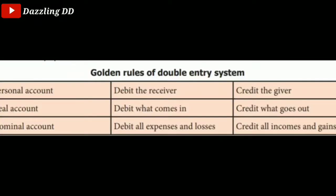Let's talk about the golden rules of accounting, or the double entry system. In the personal account: debit the receiver, credit the giver.